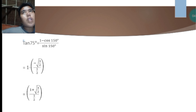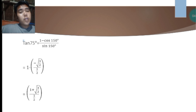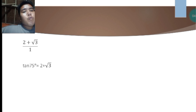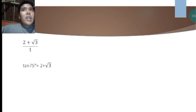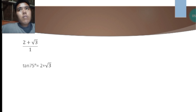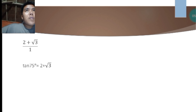We get 2 plus square root of 3 because when you multiply square root of 3 over 2 by 2, the 2s cancel, leaving just square root of 3. So the final answer is 2 plus square root of 3 over 1, which equals 2 plus square root of 3. That is the half-angle identity value of tan 75 degrees. Just follow the formula — 1 minus cos a over sine a — simplify, and you get the final answer. Thank you.